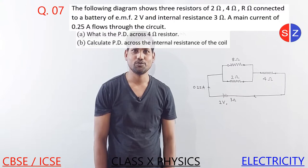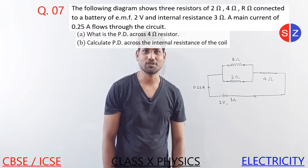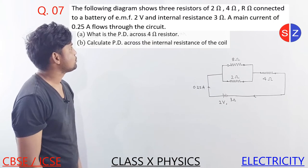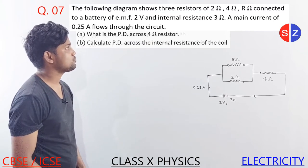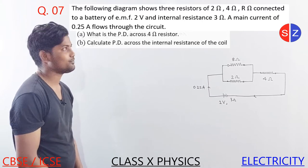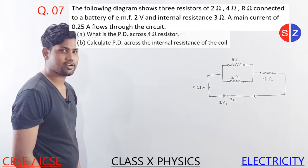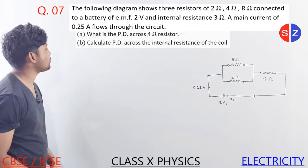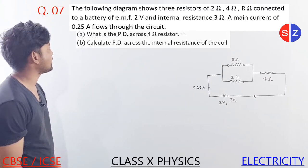So how are you all? I hope you will be better. The following diagram shows 3 resistors of 2 ohm, 4 ohm, r ohm connected to a battery of EMF 2 volt and internal resistance 3 ohm. A main current of 0.25 ampere flows through the circuit.